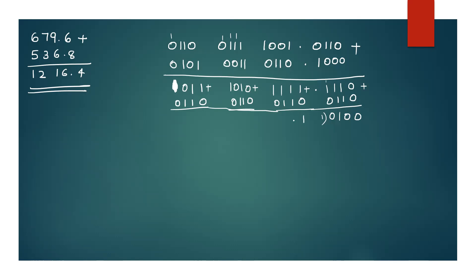1 plus 0 is 1. 1 plus 1 is 0 with carry 1. 1 with carry 1. 1 plus 1 is 0. 1 plus 1 gives 0 with carry 1. 1 plus 1 equals 0 and carry 1. 2 equals 0 and carry 1. Carry 1 equals 1.